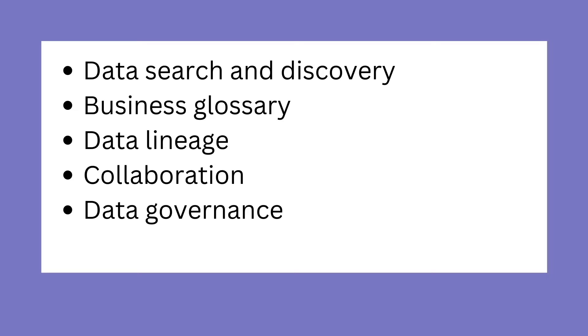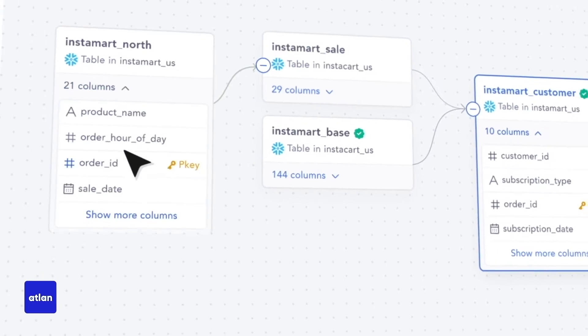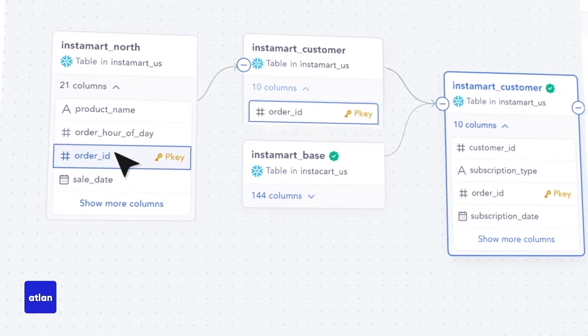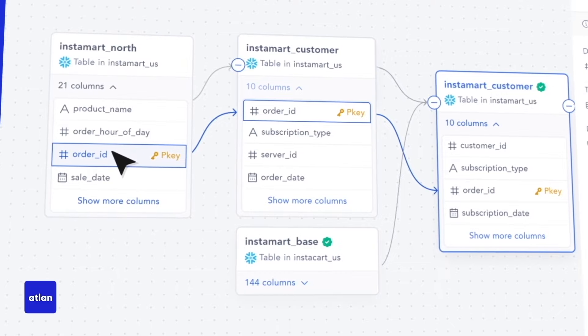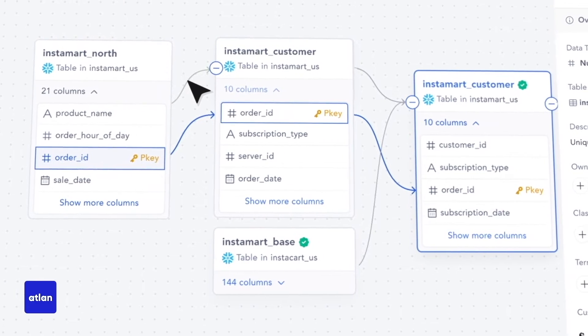If you look through modern data catalogs, they really focus on a few key areas: data search and discovery, which is pretty standard; some sort of glossary where business terms and terminology are explained; and data lineage, which sometimes tends to be an external tool — not many catalogs also cover data lineage, although the sponsor of this video, Atlan, does provide data lineage.